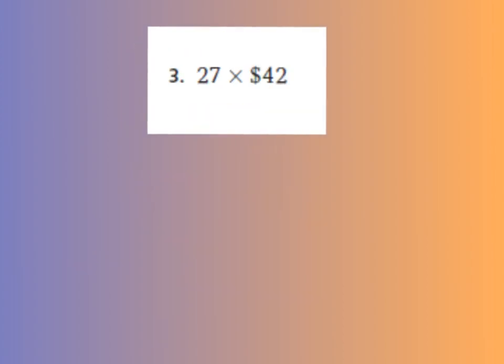Let's estimate the product for number 3. We have 27 times $42. Well, we can round first, then multiply. Let's round 27, and that rounds to 30, times $42, rounds to $40.